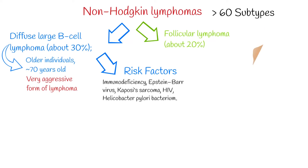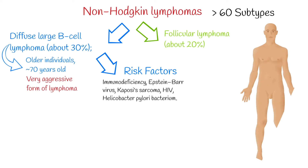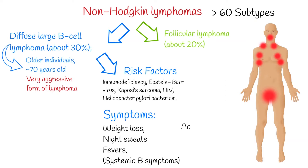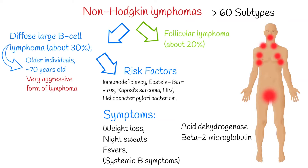The most typical presenting symptom at the time of diagnosis is a mass that is rapidly enlarging and located in a part of the body with multiple lymph nodes, such as the groin, armpits, or neck. Common symptoms include weight loss, night sweats, and fevers. These symptoms are called systemic B-symptoms.